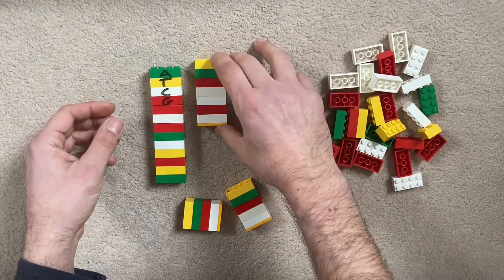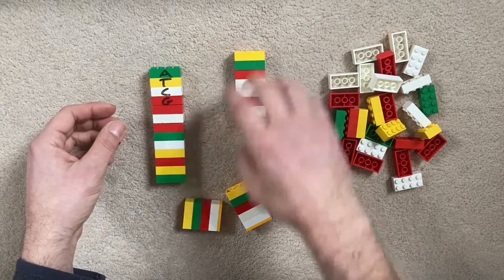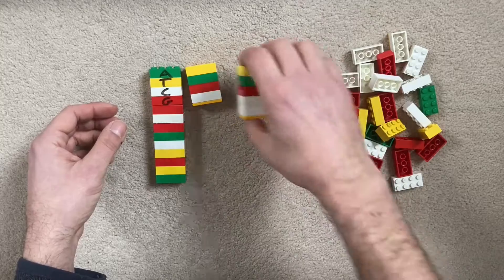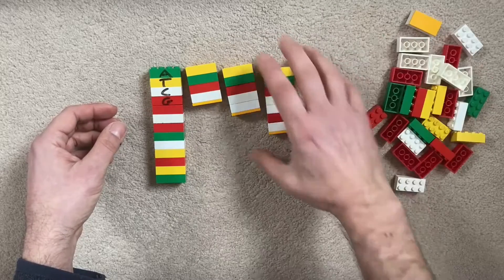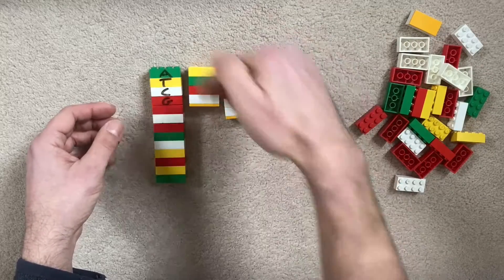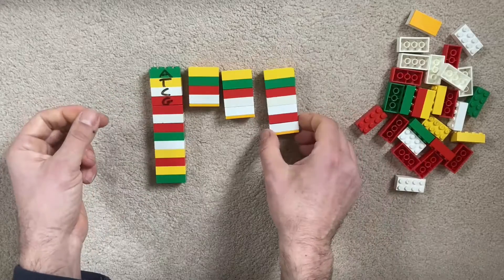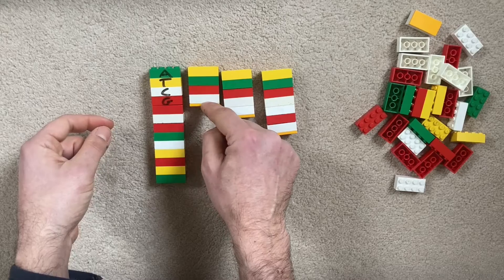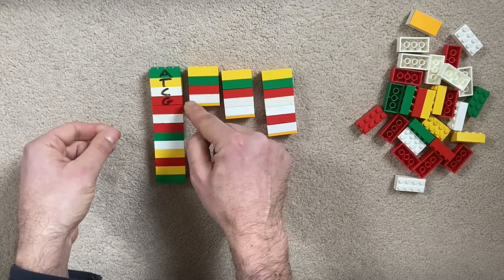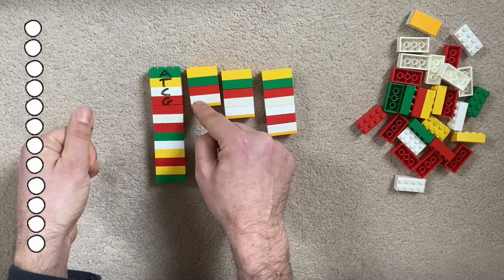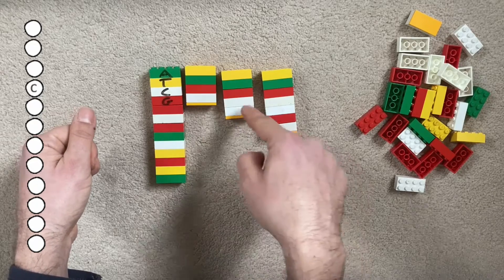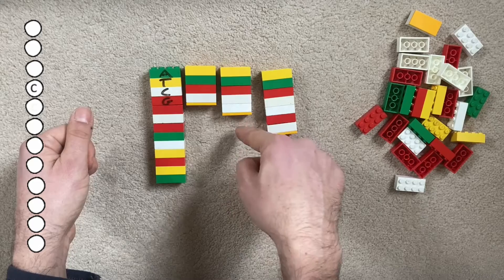So when we finish our reaction, what we end up with then is a whole load of different products of different lengths. And the scientists then separate these out and look at exactly how big these fragments of DNA are. And they say, right, well, the first fragment is four bases long and it ends with a C. So the fourth base is a C and the fifth base is a C because this fragment's five long.